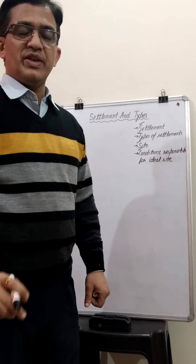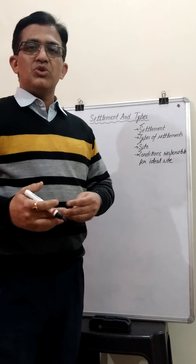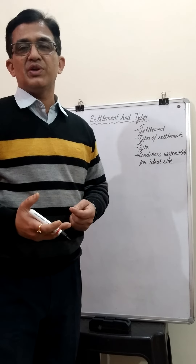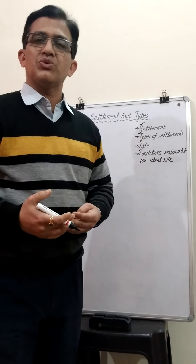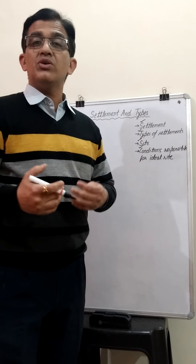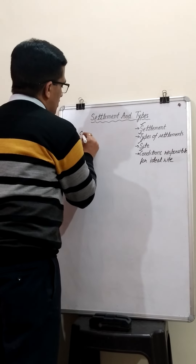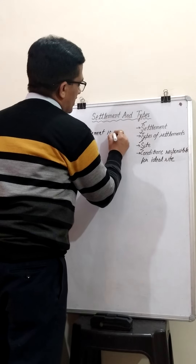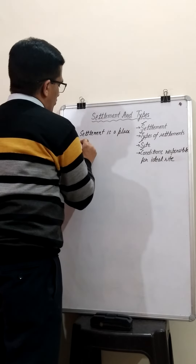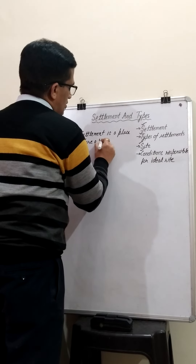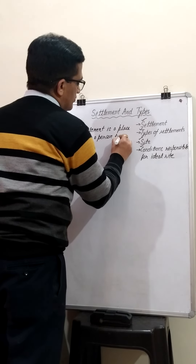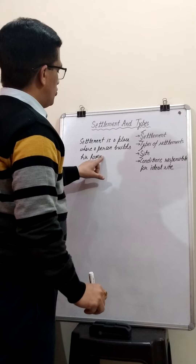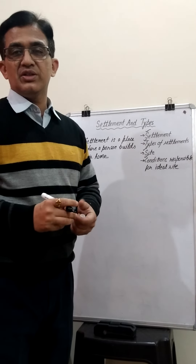The first thing is: what is a settlement? Settlement has a very simple definition. A place where a person builds his home is called a settlement. In the world there are so many people, everyone has a settlement. This is our settlement, which is called our home. So we can define it in very few words: a place where a person builds his home is called a settlement.